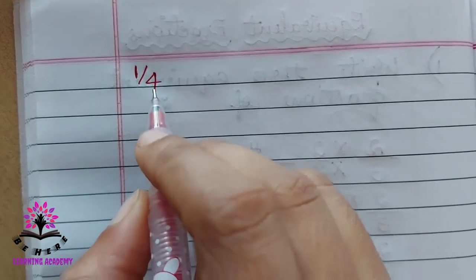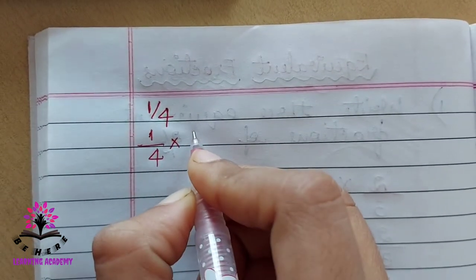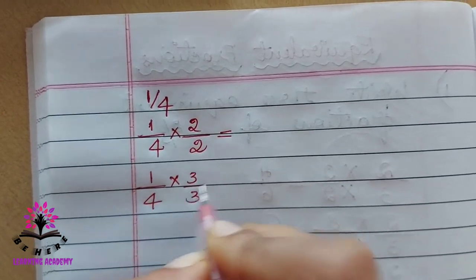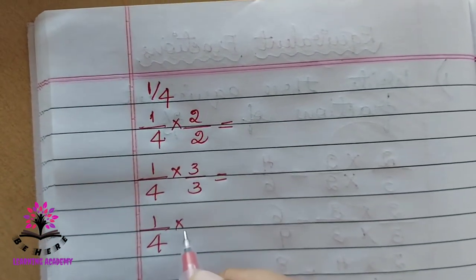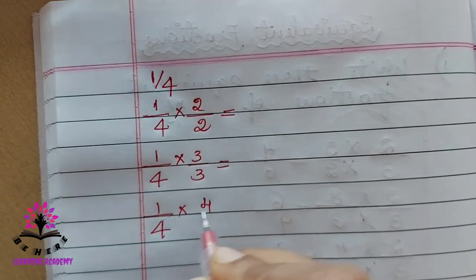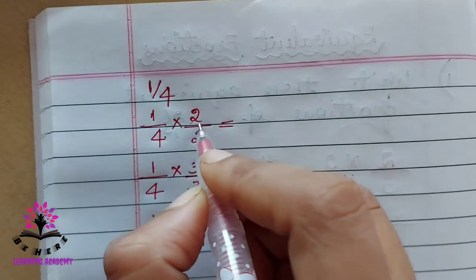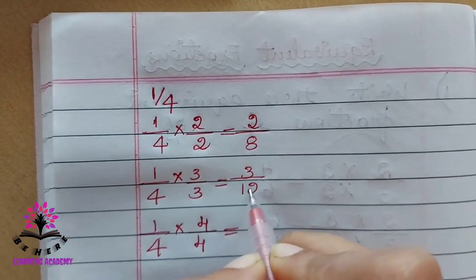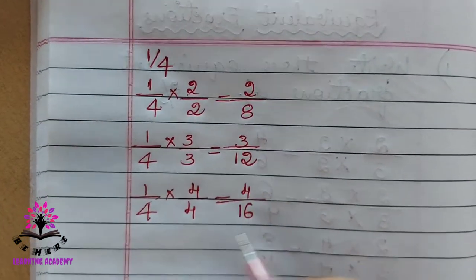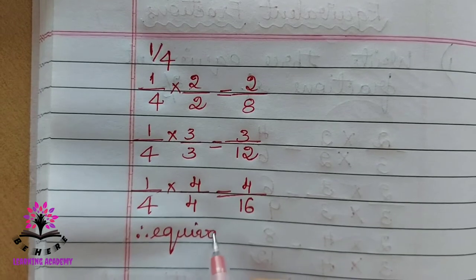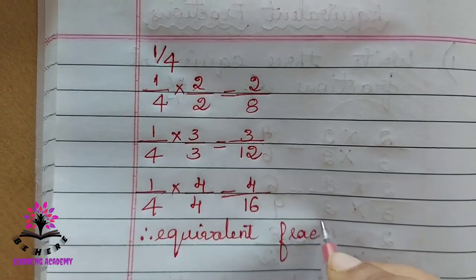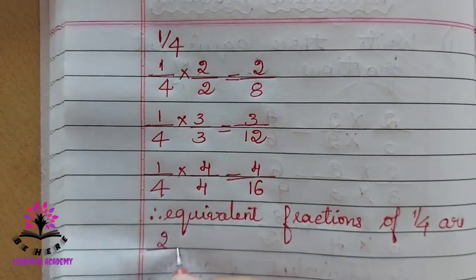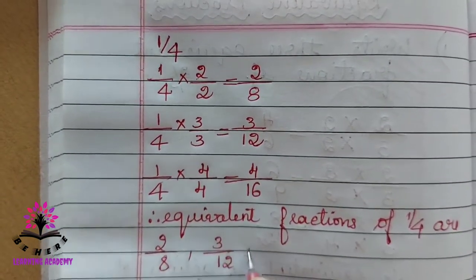Now, we have to find the equivalent fractions of 1/4. Multiply 1/4 by two, then by three, then by four. One two is two, four two is eight; one three is three, four three is twelve; one four is four, four four is sixteen. Therefore, equivalent fractions of 1/4 are 2/8, 3/12, 4/16.